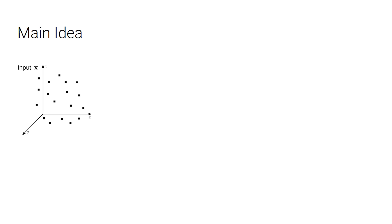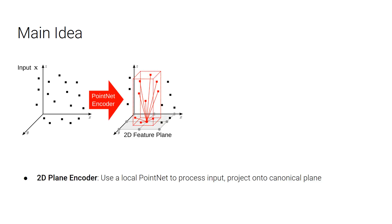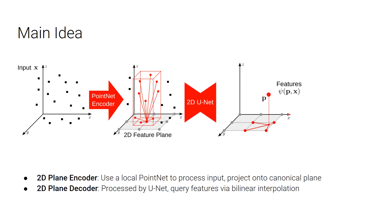Given some kind of input, for example, a sparse and noisy point cloud of a shape, we define a 2D feature plane. In this case, it's the ground plane. The feature for a particular pixel on the plane is acquired by aggregating features of those points within this column using a PointNet encoder. From this process, we now have local information on the 2D feature plane. And then, we use a 2D U-Net to further process the feature plane, which integrates the inductive biases into the model. After having the processed feature plane, we can now query the feature at every 3D point in the space using bilinear interpolation in this 2D canonical feature plane.